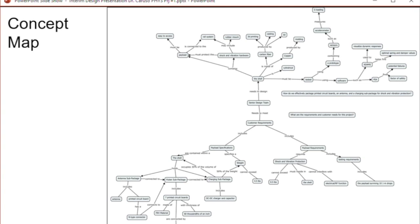This is concept map. It is based off the requirement and the customer needs for this project. It guides you how do we effectively package printed circuit board, antenna, and the charging sub-package for shock vibe protection.